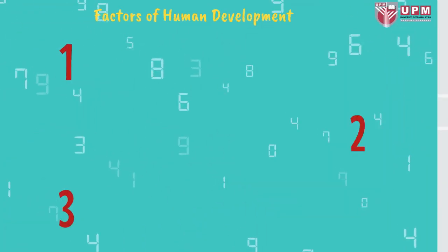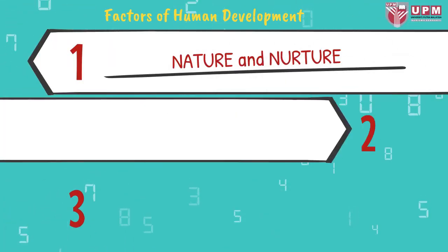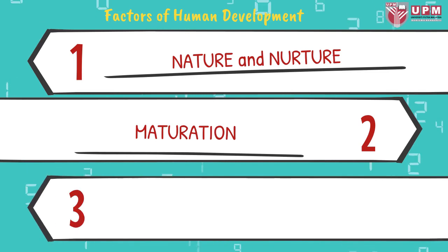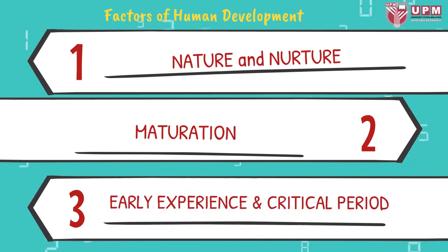Factors of human development: First, nature and nurture. Second, maturation. Third, early experience and critical periods.